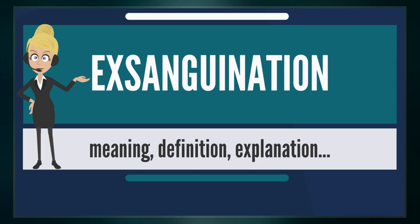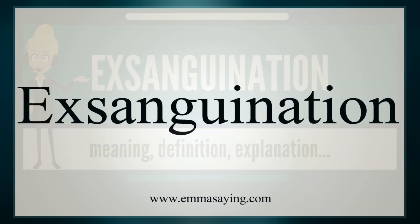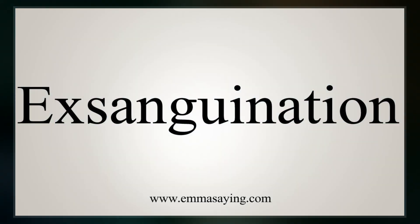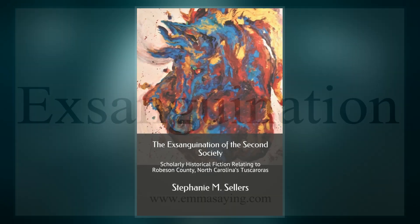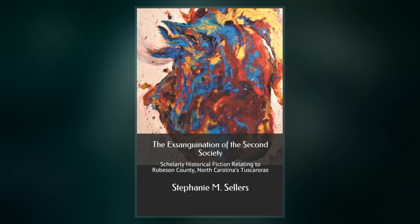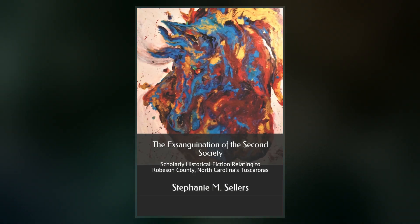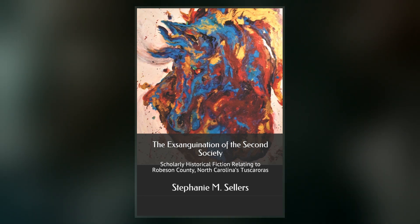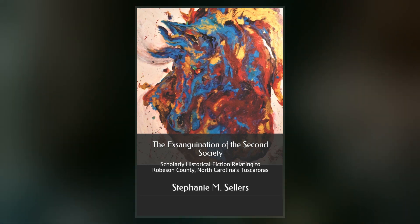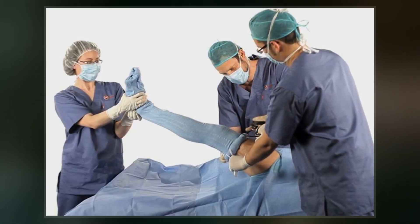The word originates from Latin. Exsanguination is used as a method of slaughter. Before the fatal incision is made, the animal will be rendered insensible to pain by various methods, including captive bolt, electricity, or chemical.